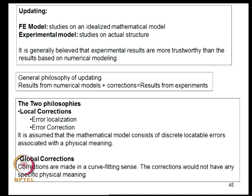The problem of updating arises because finite element models are studies on an idealized mathematical model, while experimental models are studies on the actual structure — experimental results are generally considered more trustworthy. The general philosophy of updating is that results from numerical models plus corrections lead to results from experiments. Local corrections localize errors within the FE model and correct them with physical meaning; global corrections are made in a curve-fitting sense without specific physical interpretation, simply forcing the mathematical model to reconcile with experimental data.